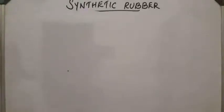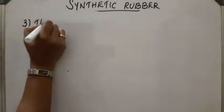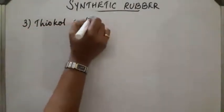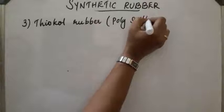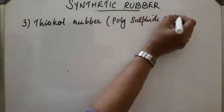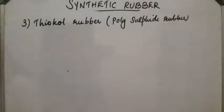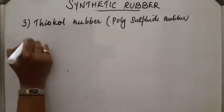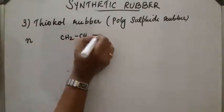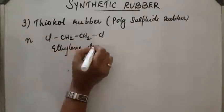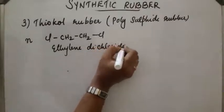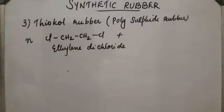Next compound is thiocol rubber or polysulfide rubber. It is obtained from ethylene dichloride and sodium polysulfide. See the reaction. Ethylene dichloride Cl-CH2-CH2-Cl on reaction with polysulfide, sodium polysulfide Na2Sx.